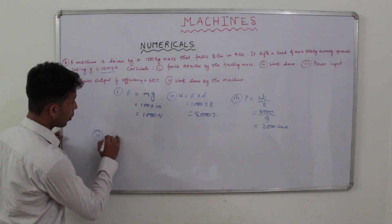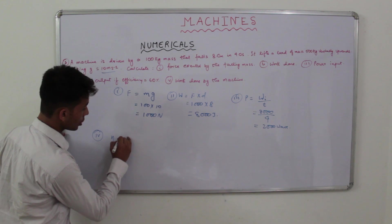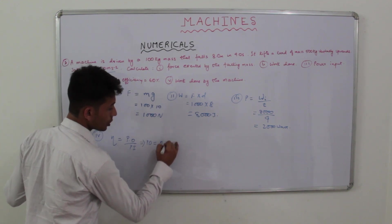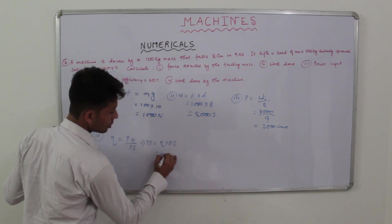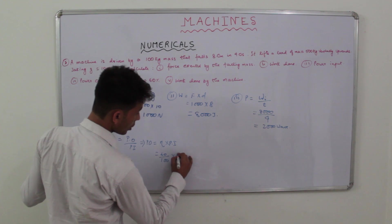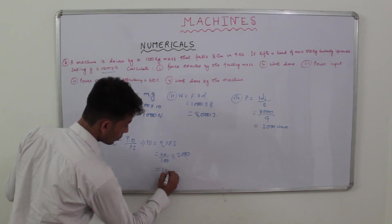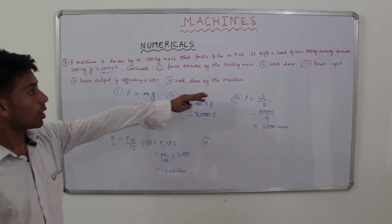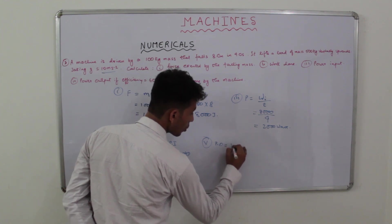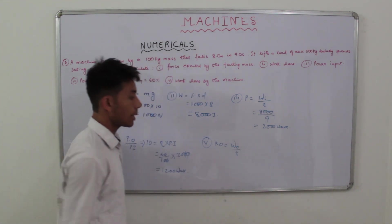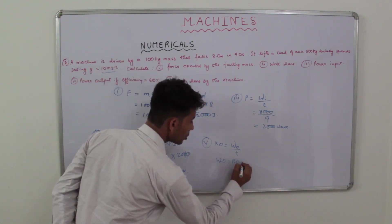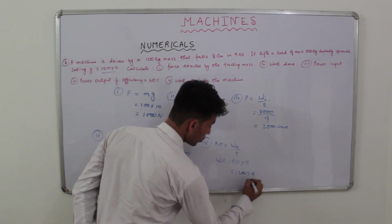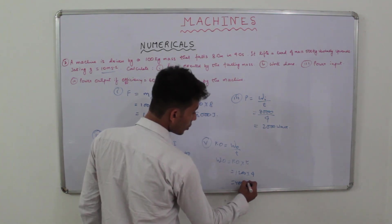Part (4): power output, given efficiency = 60%. Efficiency = power output / power input, so power output = (60/100) × 2000 = 1200 W. Part (5): work done by the machine — power output = work output / time, so work output = 1200 × 4 = 4800 J.